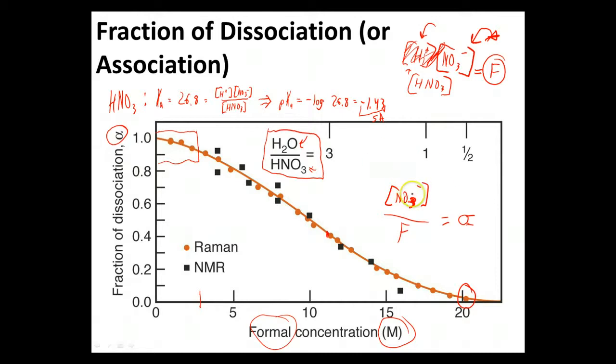And of course if it was the fraction of association, we'd be looking at HNO3 versus formal concentration. And we'd see the graph just be completely reversed from that. But hopefully this gets you some idea of why we see fraction of dissociation matter so much, why we stay at dilute concentrations, a reminder of what Ka looks like and pKa looks like for really strong acids, and gives us some idea of how formal concentration gets entangled with fraction of dissociation.